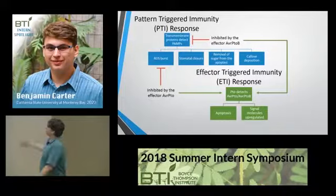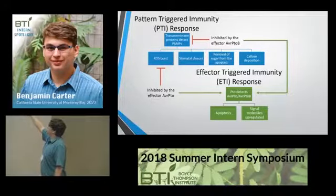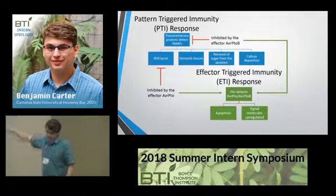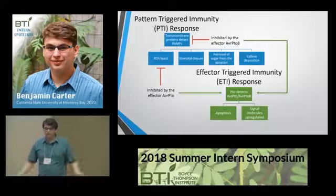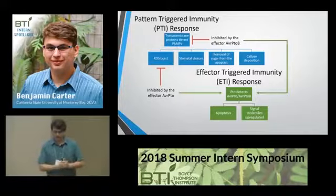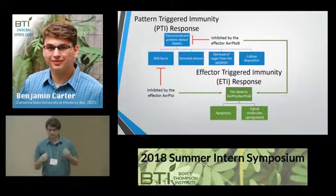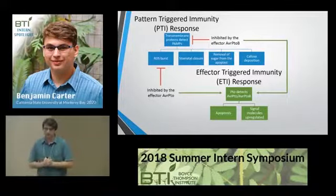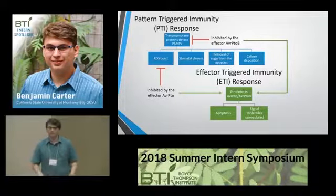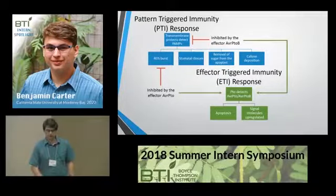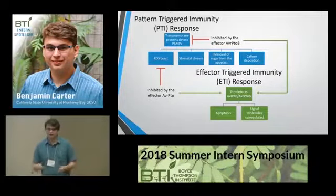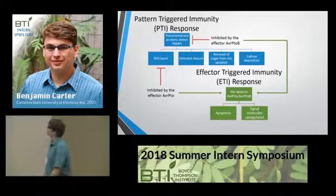Plants in turn have a secondary line of defense, ETI. ETI detects these effectors and leads to a very specific and strong response, usually involving localized programmed cell death. This keeps the pathogen from spreading.